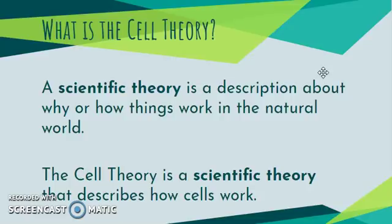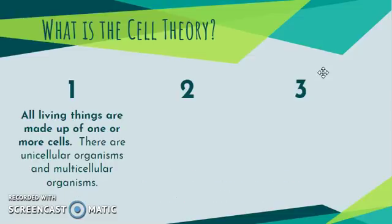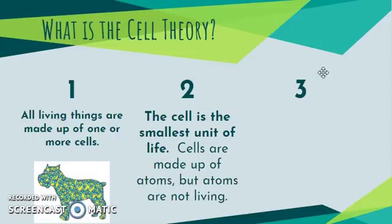The cell theory is a scientific theory that is a description about why or how things work in the natural world — specifically, it describes how cells work. There are three parts. The first part: all living things are made up of one or more cells, so there are unicellular organisms and multicellular organisms. The second part: those cells are the smallest unit of life. Cells are made up of atoms and molecules, but atoms and molecules are not living things.